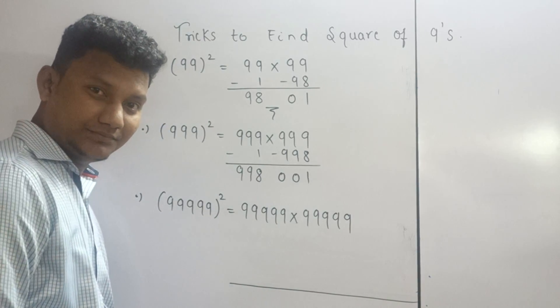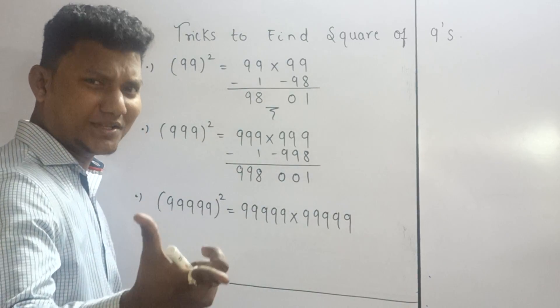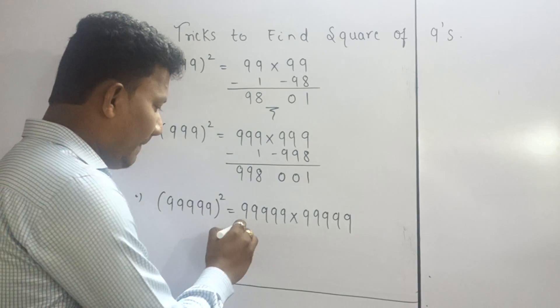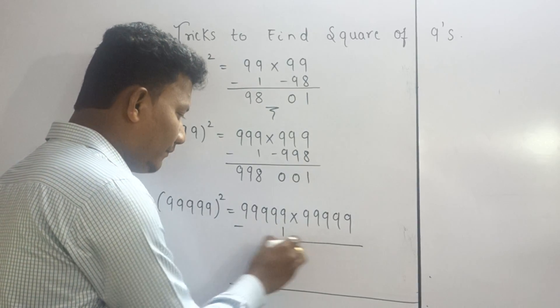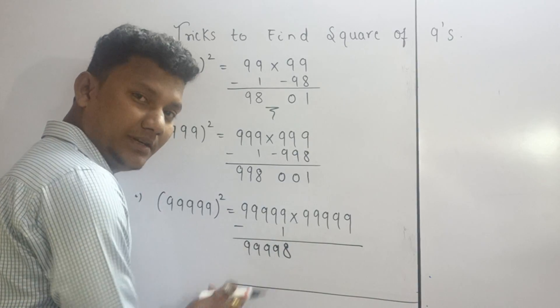So big number. Five 9's squared. Simple concept. What is the concept? Minus 1. So this will be 99998.